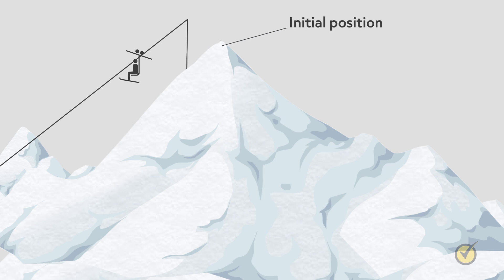We consider the top of the mountain the initial position and the bottom of the mountain the final position. All the skiers took different paths to get from the top of the mountain to the bottom of the mountain but their displacement is exactly the same.